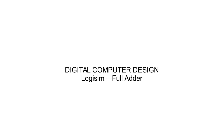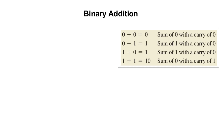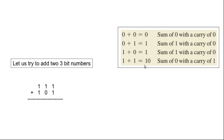We know that a half adder adds two bits. When we add 0+0 it results in a sum of 0 with a carry of 0. When we add 0+1 it results in a sum of 1 with a carry of 0. When we add 1+0 it results in a sum of 1 with a carry of 0. And when we add 1+1 it results in a sum of 0 with a carry of 1.